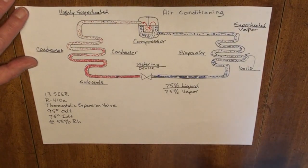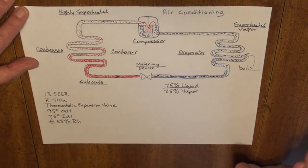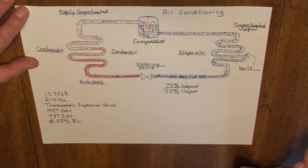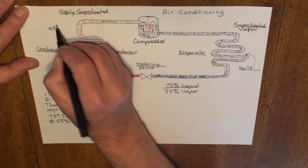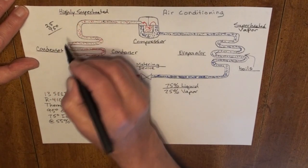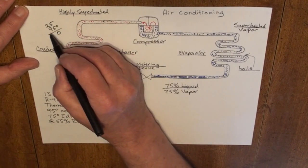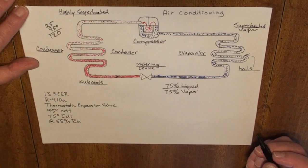Now, we've got some basic differences here. With the 13 seer, we will not add 30 degrees to the outdoor temperature to determine the saturation temperature. We will only add 25 degrees. So we've got a 95 degree day. We will add 25 degrees to it. That will give me a condensing temperature of 120 degrees.